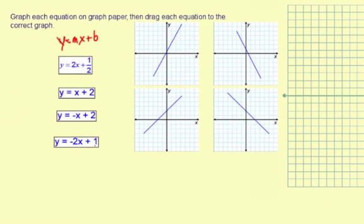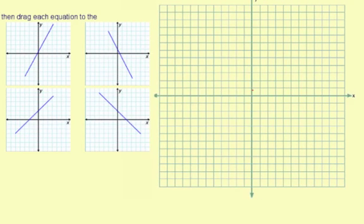Y equals negative 2x plus 1. The y-intercept is a plus 1. So I'll put a point there. And then the slope is negative 2, which means I'll go down 2 and then right 1. Down 2, right 1. Down 2, right 1. Like that. And all these points together make up the line. So that's what that graph should look like. y equals negative 2x plus 1.